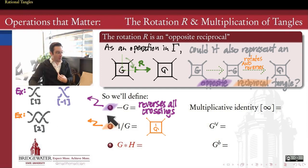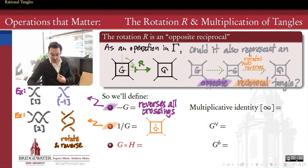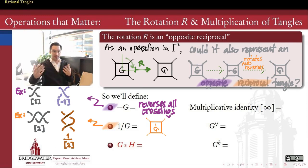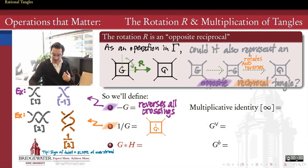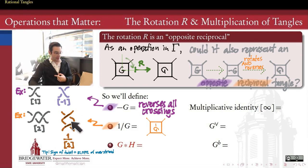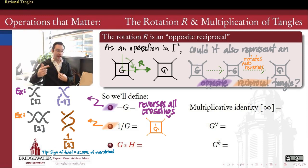So tangle [2] has its reciprocal formed by first rotating the tangle and then reversing the crossings — and the result is the tangle we call [1/2]. A quick tip for distinguishing positive from negative twists: the sign of a twist is the same as the slope of the strands that are going over. So in the [1/2] tangle, even though it's vertical, the over-crossings are achieved by the lines with positive slope — making it a positive twist. By contrast, the negative one tangle is negative because the negatively-sloped strand is going over.